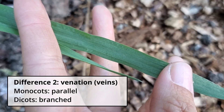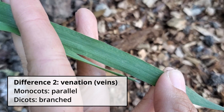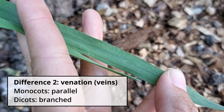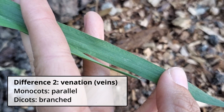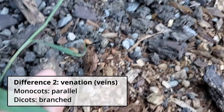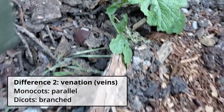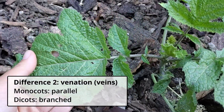The primary veins of monocots also tend to be parallel, like in this blade of grass, whereas in dicots they're more complex and often branch.